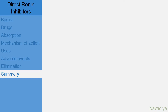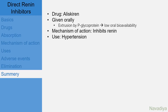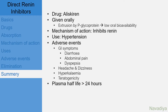So that was direct renin inhibitor Aliskiren. Quick summary: Aliskiren is the only direct renin inhibitor approved. It is given orally, and its extrusion by P-glycoprotein back into the intestinal lumen decreases its oral bioavailability. Mechanism of action is inhibition of renin. It is used in hypertension. Adverse effects are GI symptoms like diarrhea, abdominal pain and dyspepsia, headache, dizziness, hyperkalemia, and teratogenicity. Plasma half-life is more than 24 hours and elimination occurs mainly by feces.